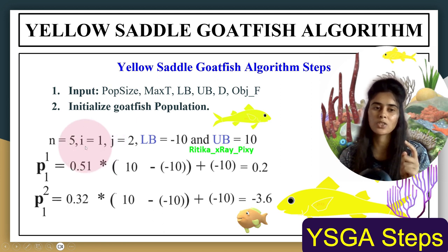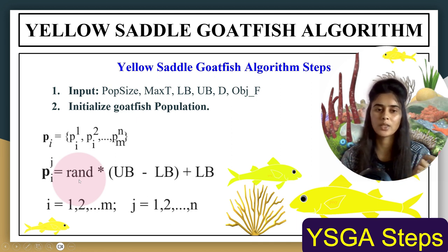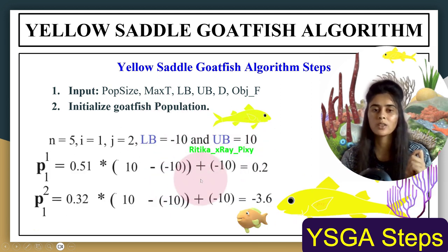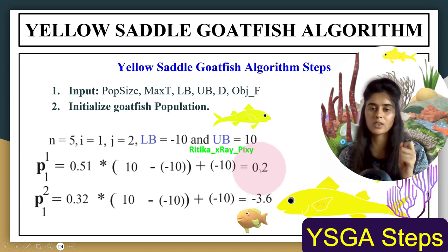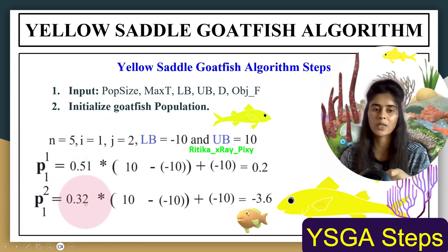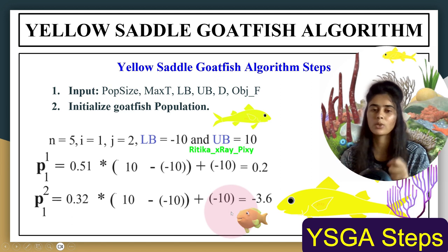We initialize the position for each search agent randomly in the search space using the equation: X = rand × (upper_bound − lower_bound) + lower_bound, where rand is a normally distributed random value between 0 and 1. For example, for the first agent, first dimension: 0.51 × (10 − (−10)) + (−10) = 0.2. For the second dimension: 0.32 × (10 − (−10)) + (−10) = −3.6.